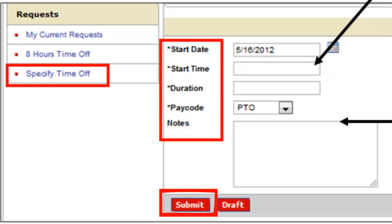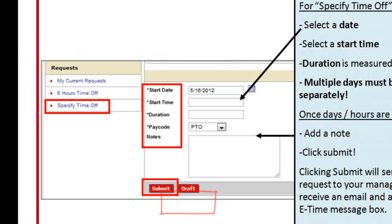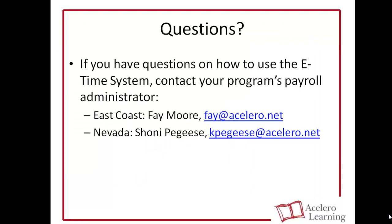Clicking Submit will send your request to your manager. They'll receive an email and a note in their eTime message box. And that's it. If you have further questions on how to use the eTime system, you can contact your local payroll administrator. Thank you very much for watching this tutorial.